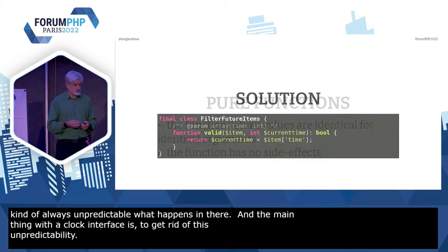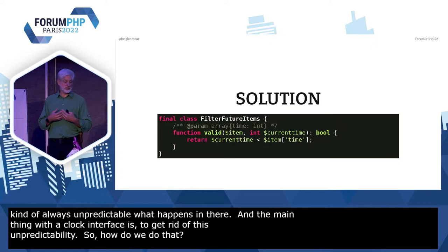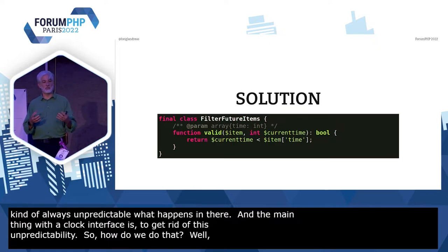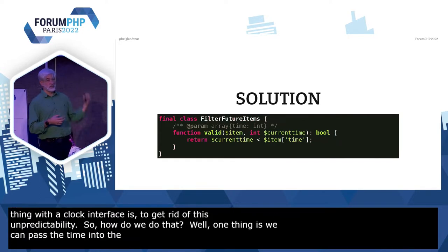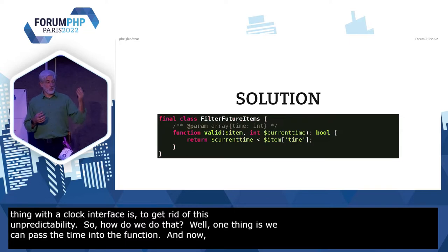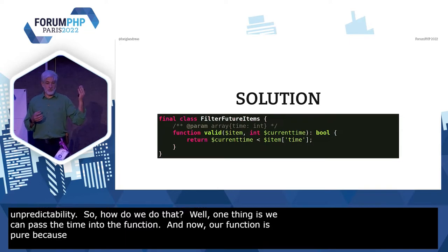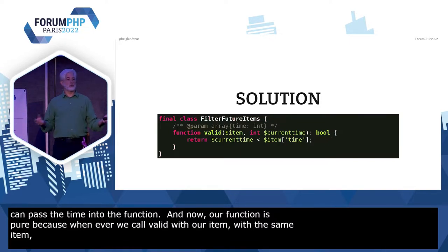The main thing with the clock interface is to get rid of this unpredictability. So how can we do that? Well, one thing is we can pass the time into the function. And now our function is pure. Because whenever we call `validate` with our item, with the same item, and with the same current time, we get the same result out of that.